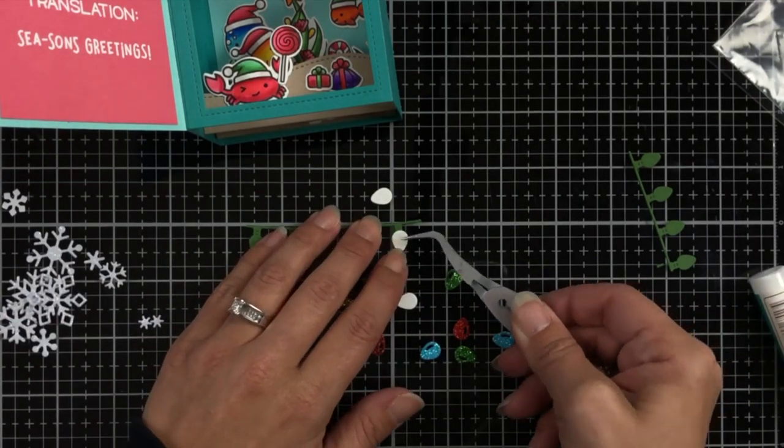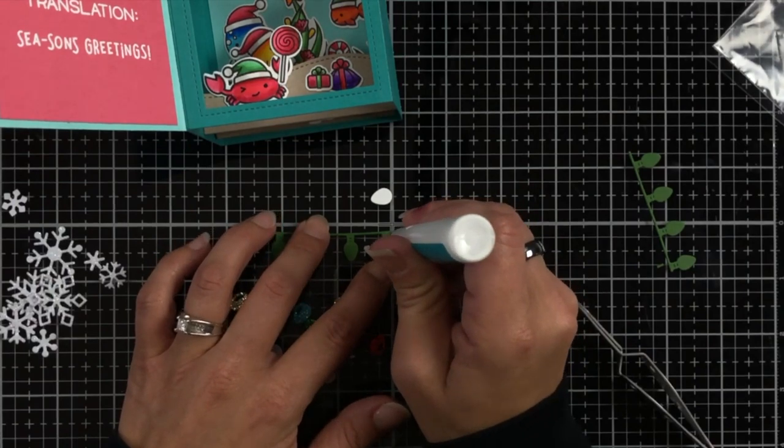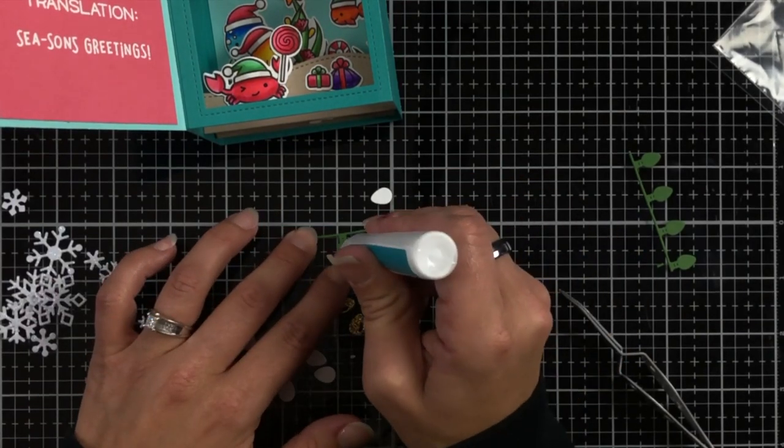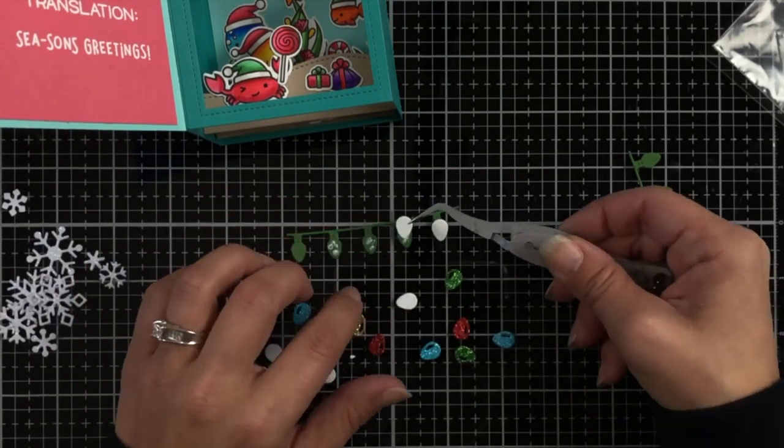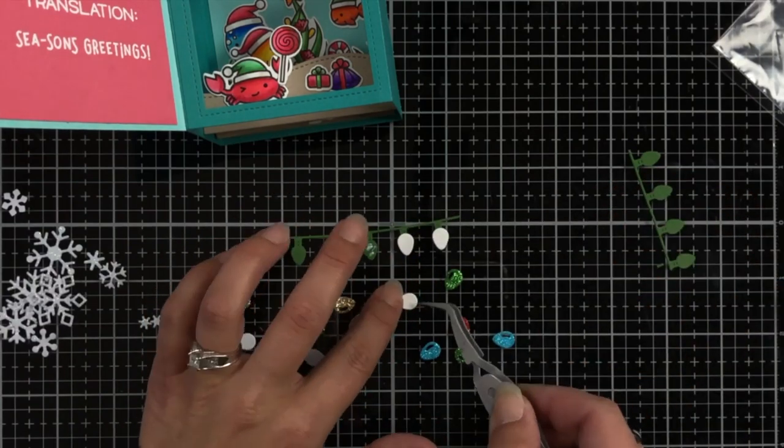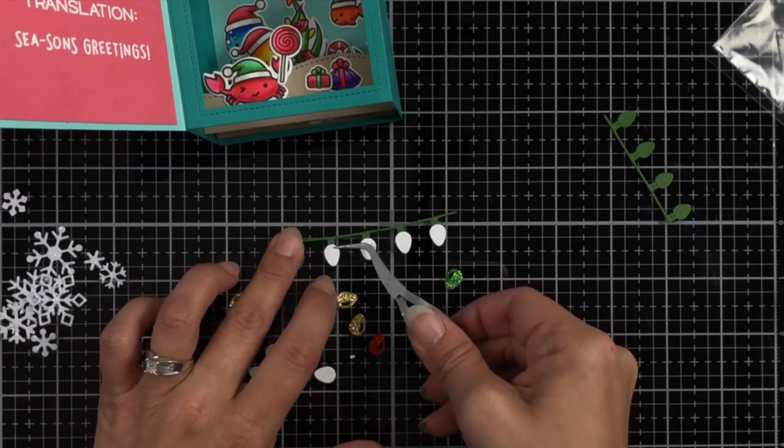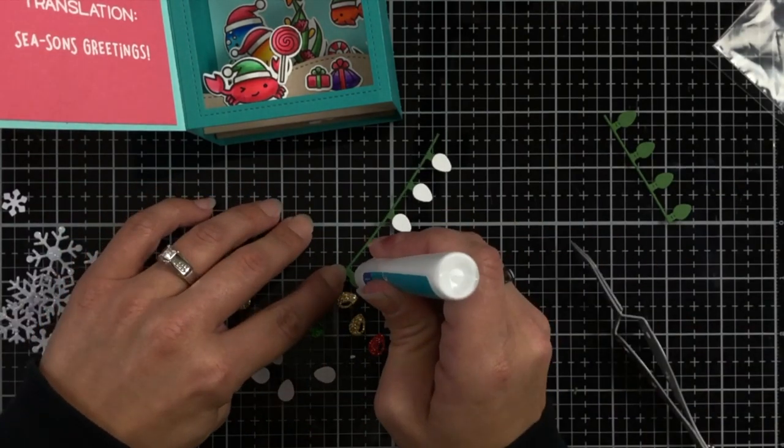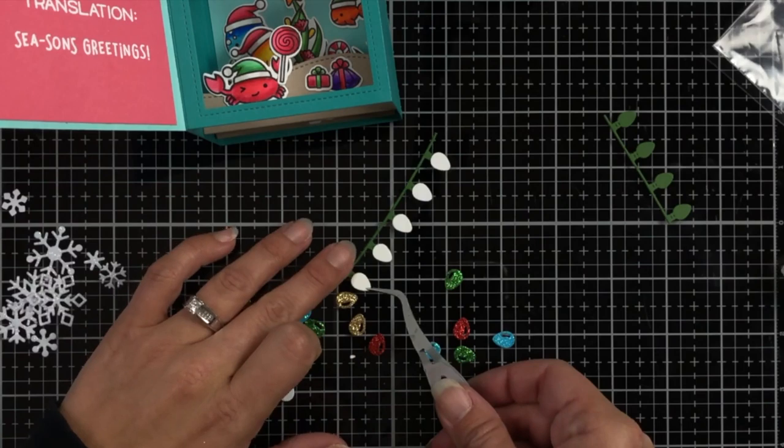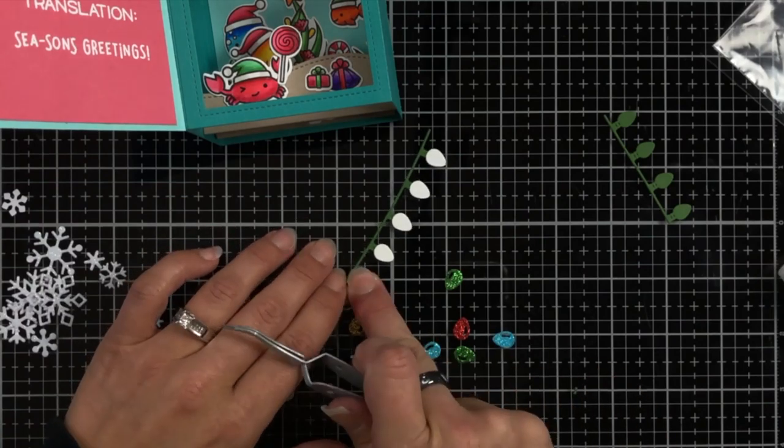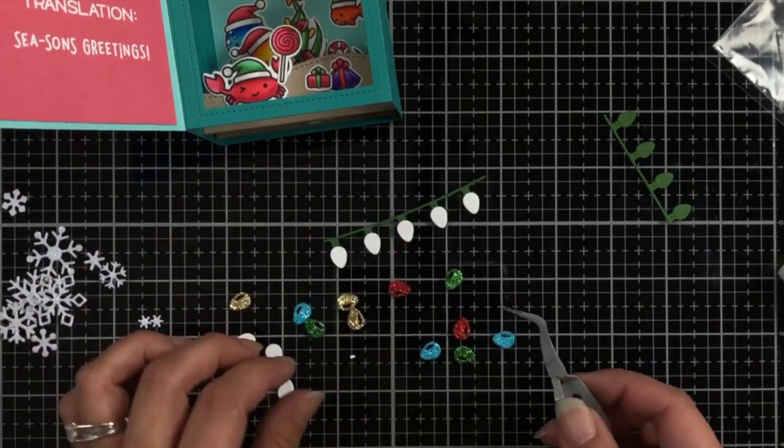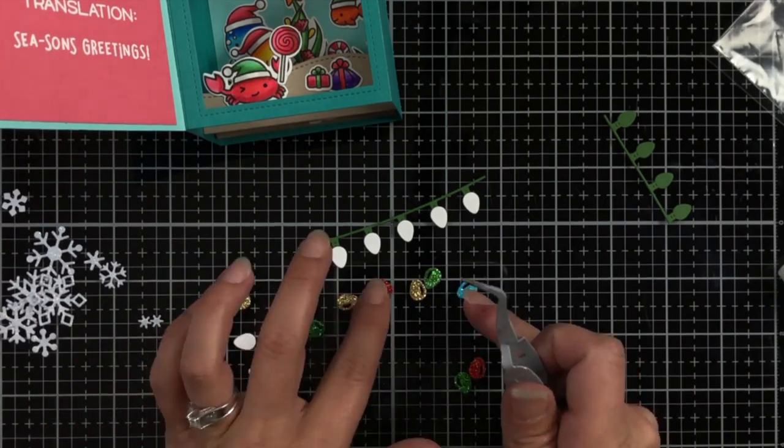So I'm just going to take those and add those white bulbs to my Noble Fur string of lights. And I still had some of those light bulbs die cut from glitter cardstock. And I'm going to go ahead and attach those. I mean, we already have a Christmas tree underwater. Why not have a string of lights, right? And that made me happy because then I got my glitter in there. Now, also, I had some leftover snowflakes.